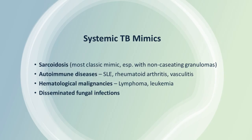For systemic TB presenting as fever, pyrexia of unknown origin, and hepatosplenomegaly, the most important mimics to keep in mind are autoimmune disorders, malignancies like leukemia and lymphoma, and disseminated fungal infections.